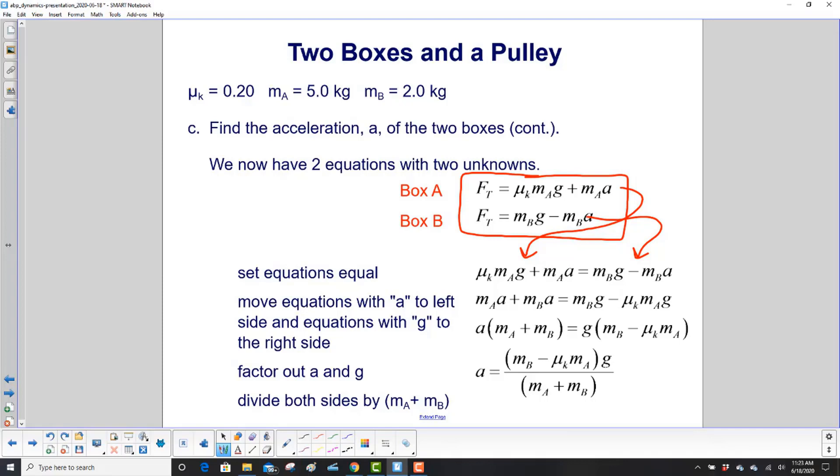and all the ones with G to the right side. Now we're skipping a couple of steps here because we've done this before with the Atwood's machine. So let me just talk through it. Here's your M sub A A on the left side. That's good. It's already there.